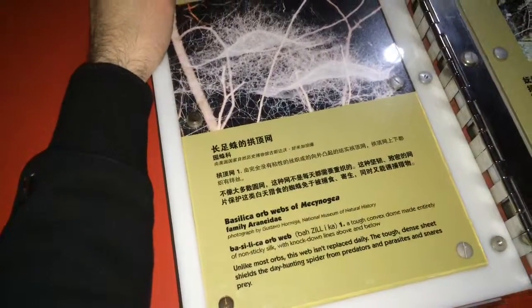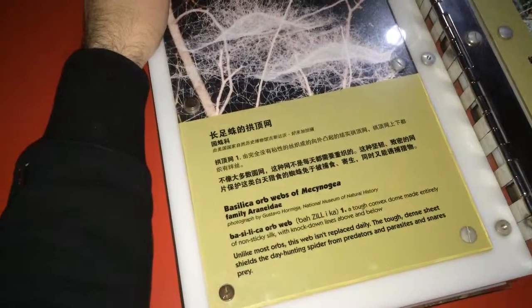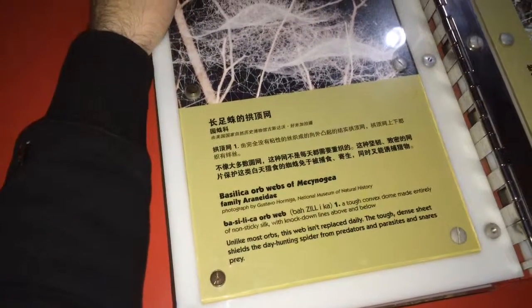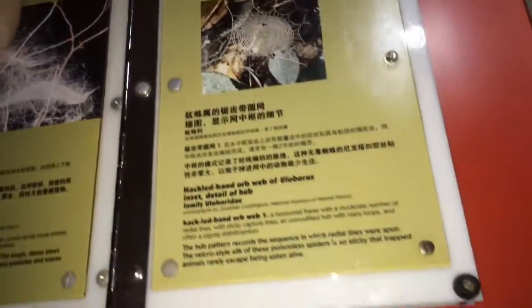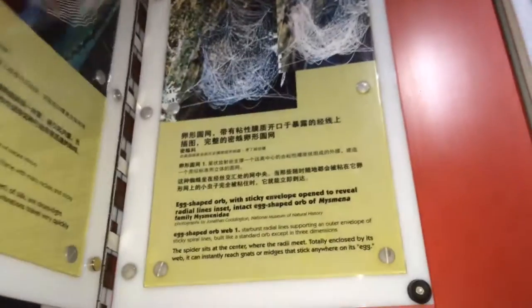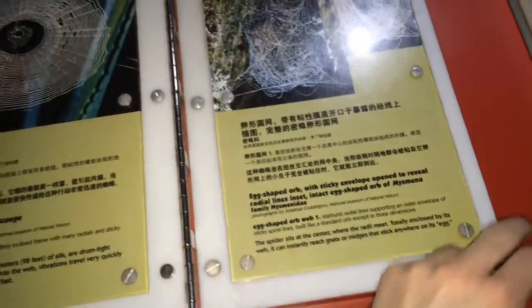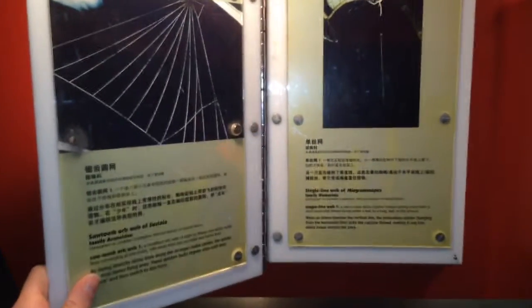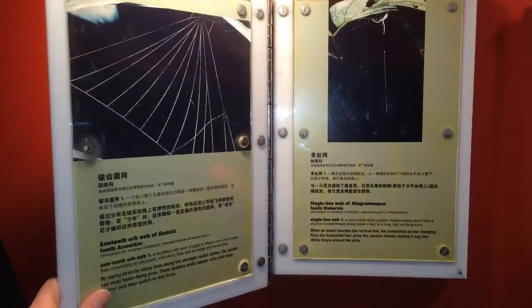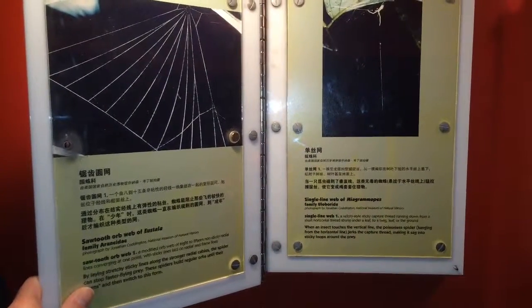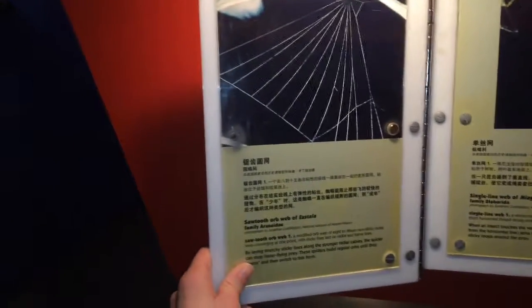The silica orb web is not replaced daily, unlike most webs. Tuft and sheet shields protect the day-hunting spider from predators and parasites and also snare prey. Hackle-band orb webs are fascinating — you can see all the different spider webs. There's the orchard web, egg-shaped orb, and a single line of the Mastophora family. This one just jerks the line around the prey — that's interesting. Sawtooth orb web.